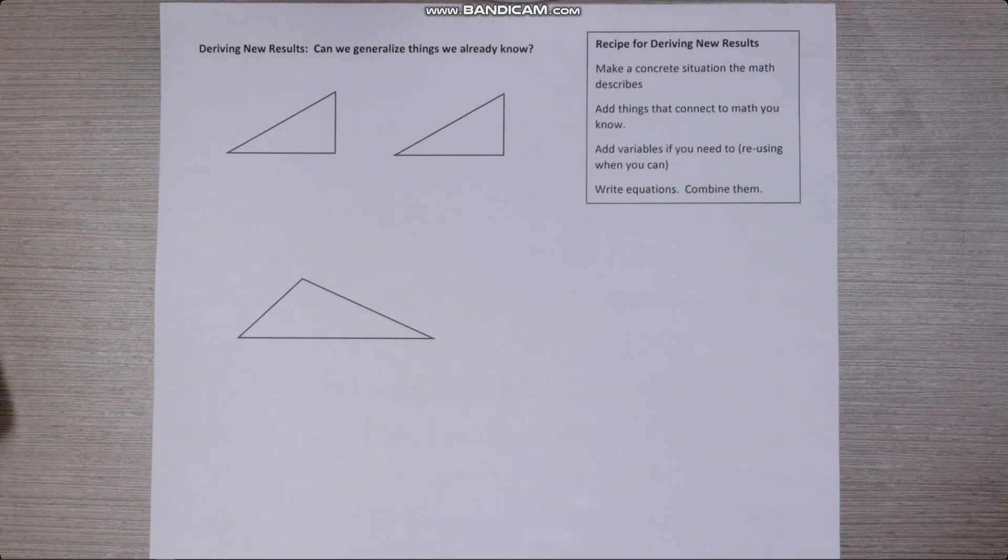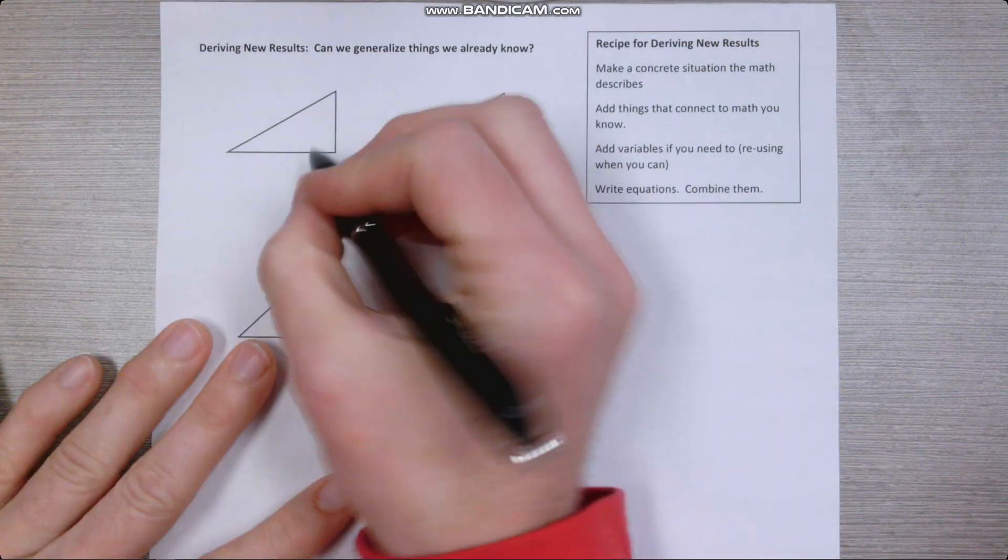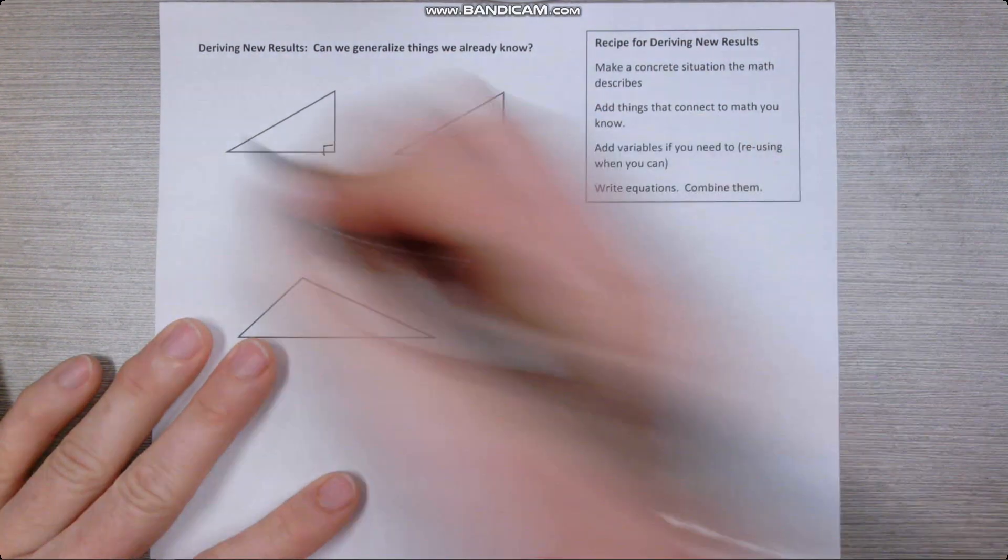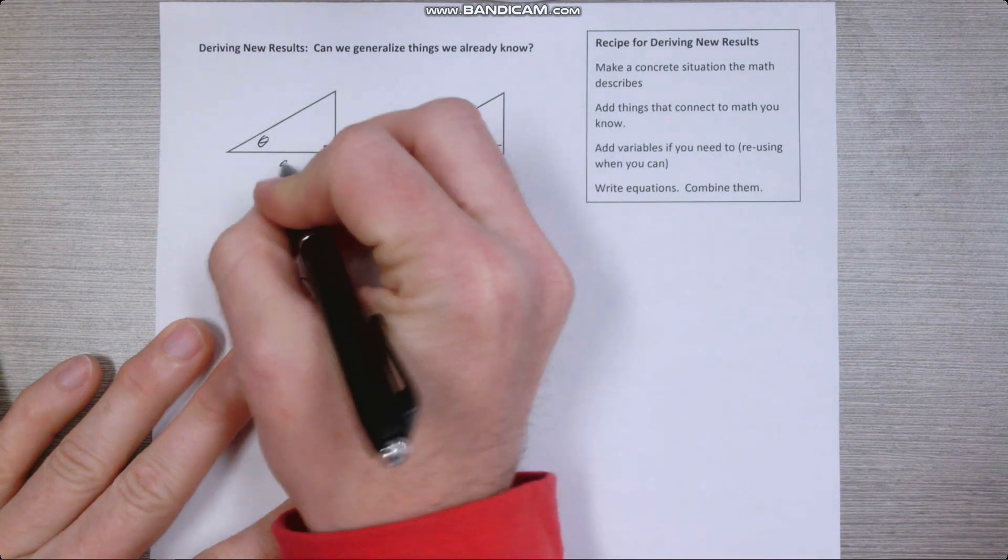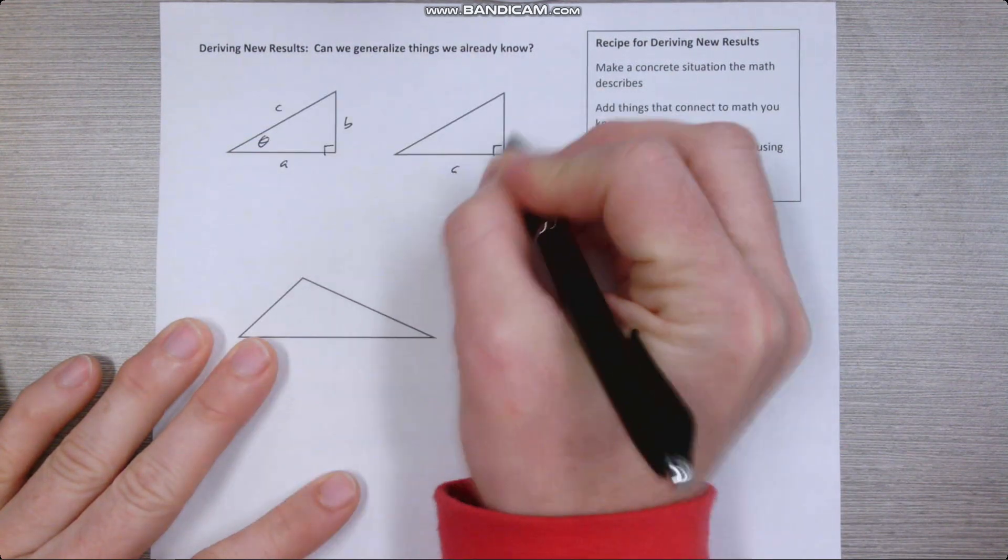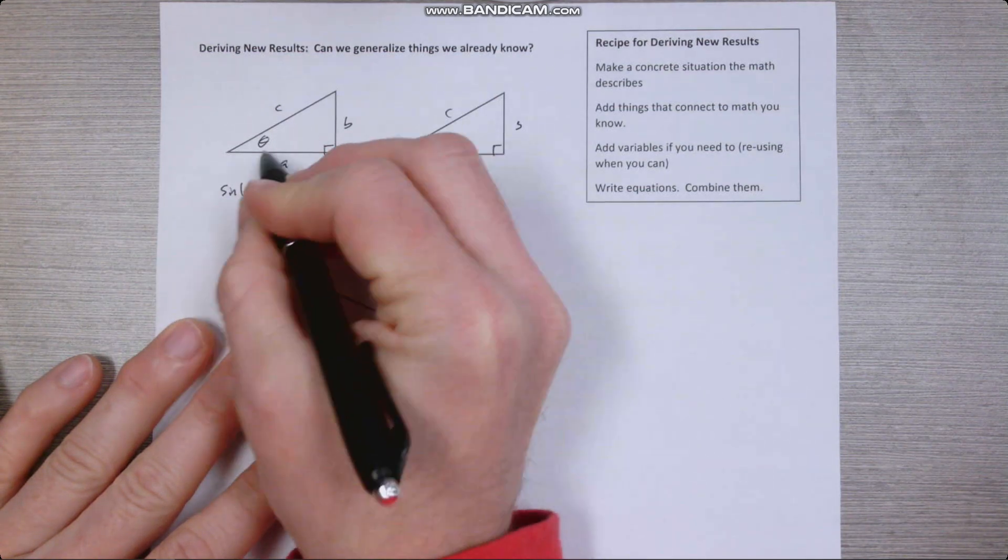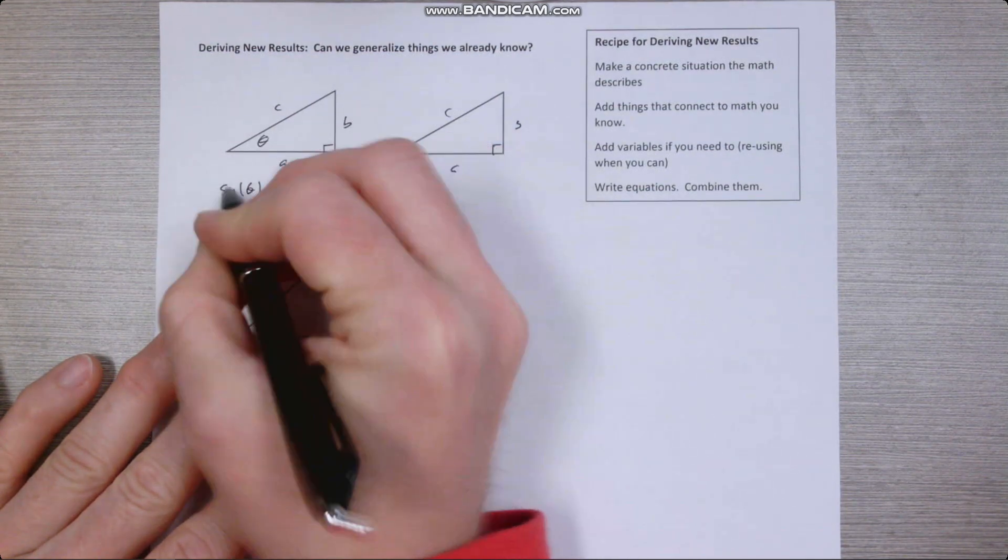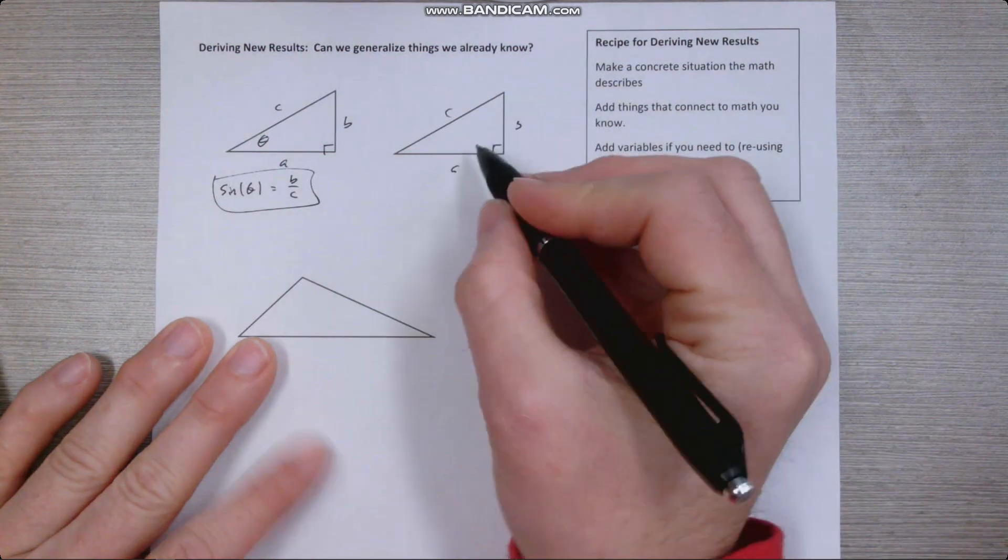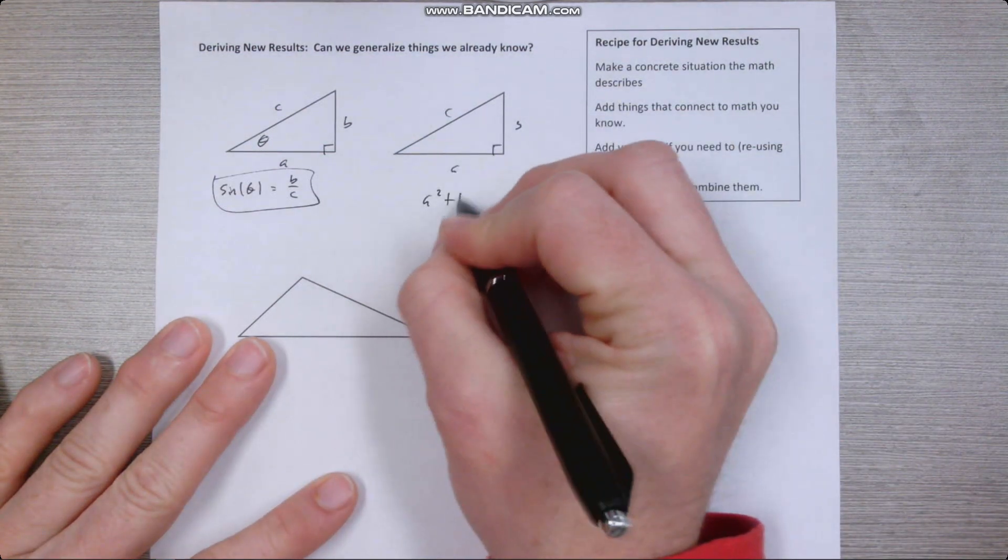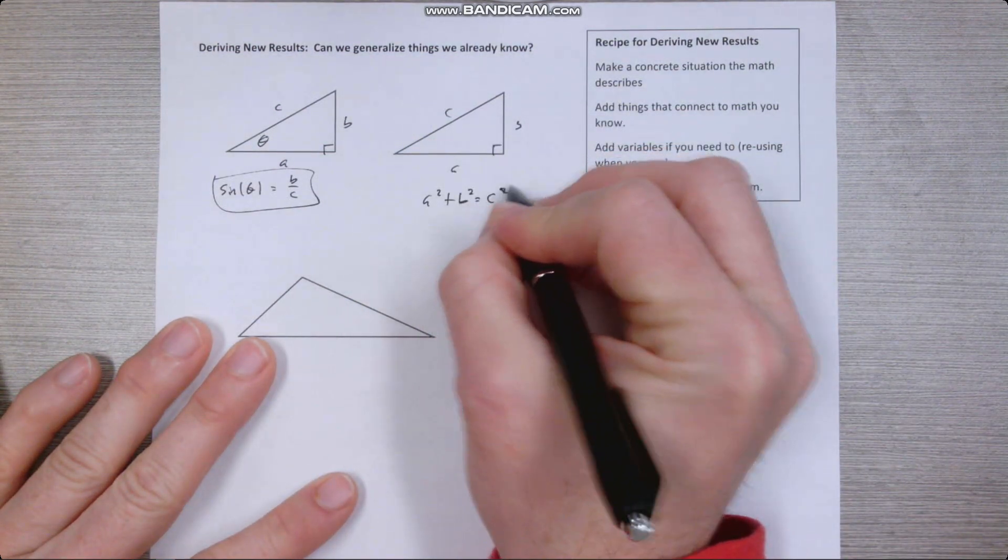So we'll start at the simplest place we can. Let's try and generalize some helpful facts that we already know. So we know a bunch of useful things about right triangles. For example, if we label these ABC, like one fact we know is sine theta equals opposite side over hypotenuse. Useful fact. Another thing we know is the Pythagorean theorem. Also a useful fact.